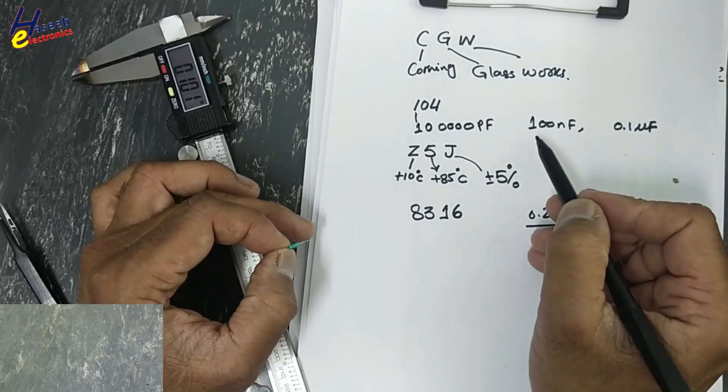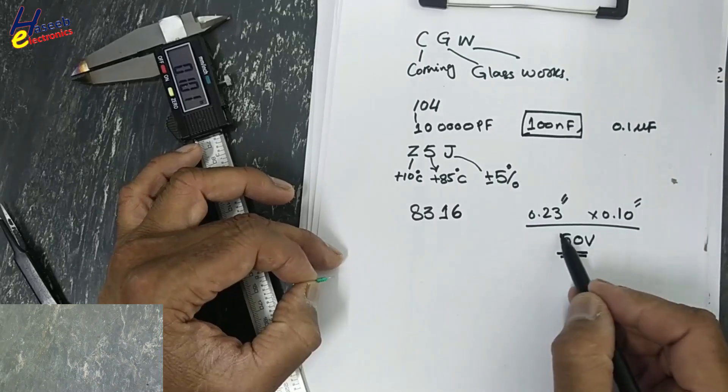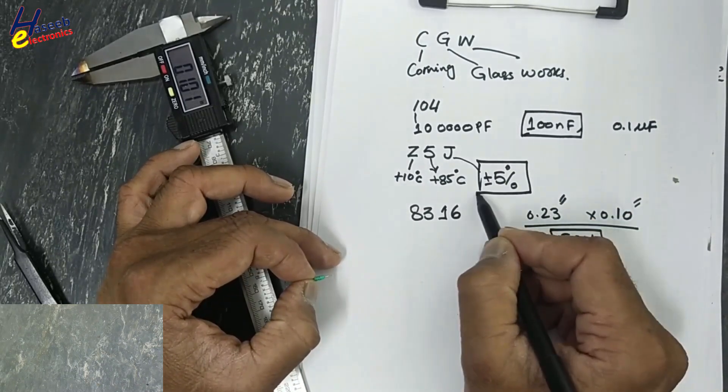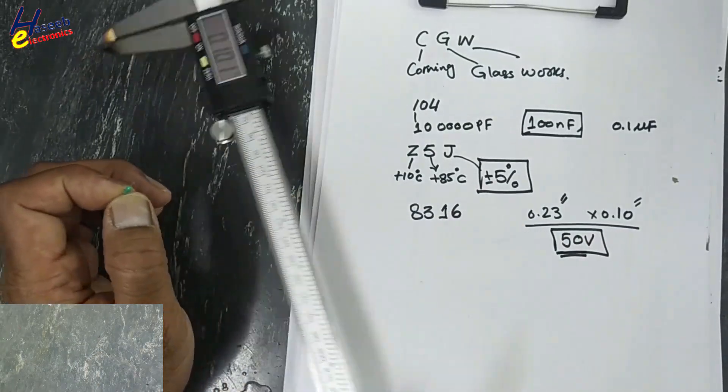So this capacitor is 100 nanofarad, 50 volts, plus minus 5% tolerance, working temperature range plus 10 degree Celsius to 85 degree Celsius.